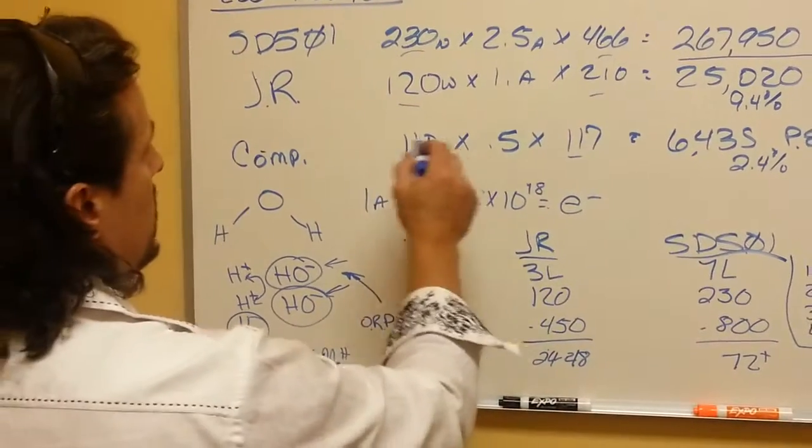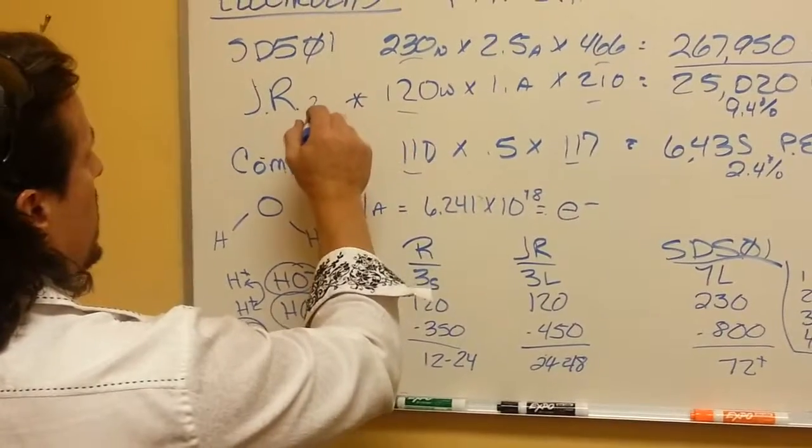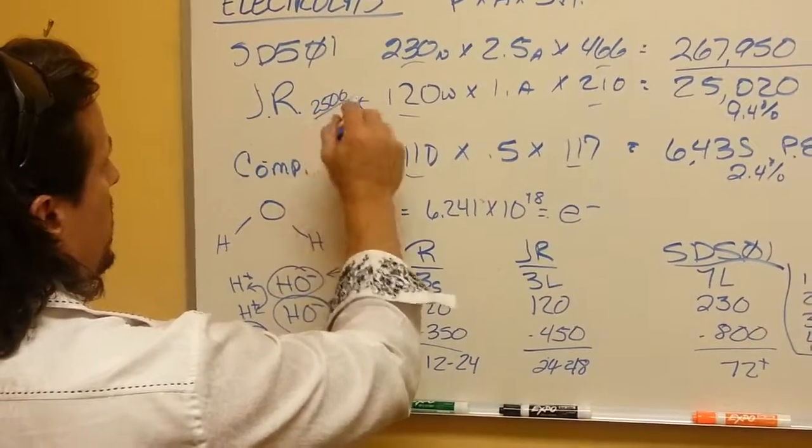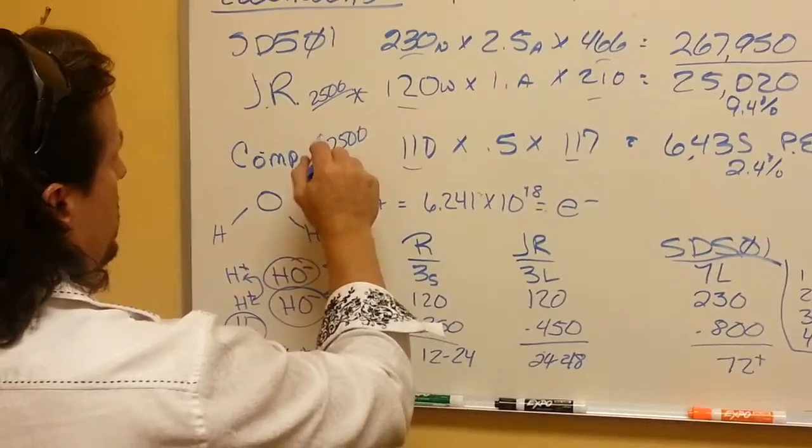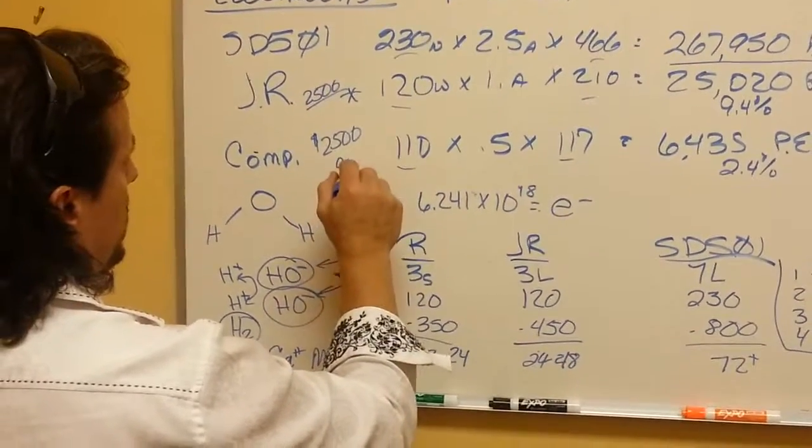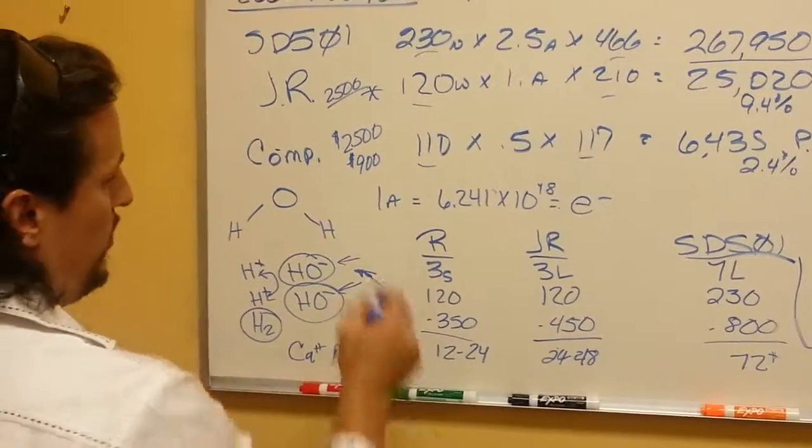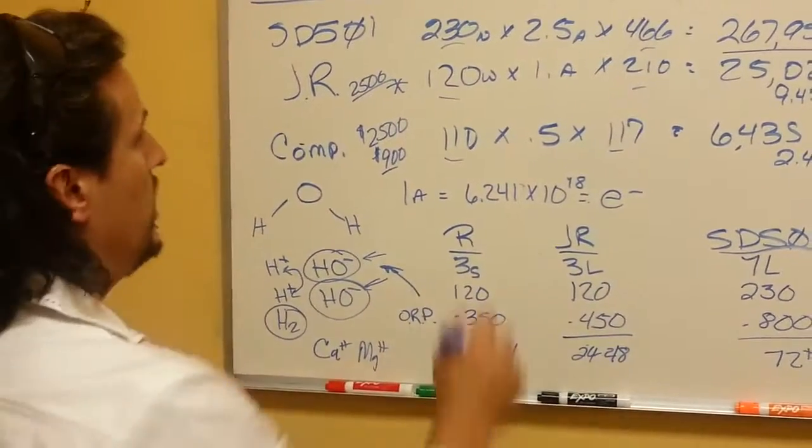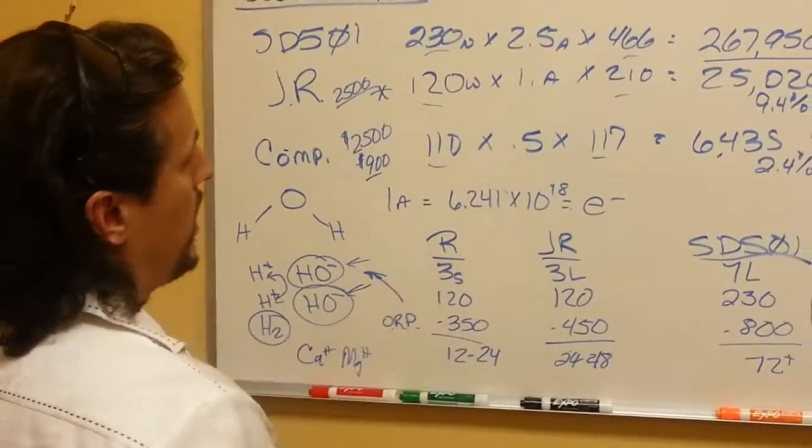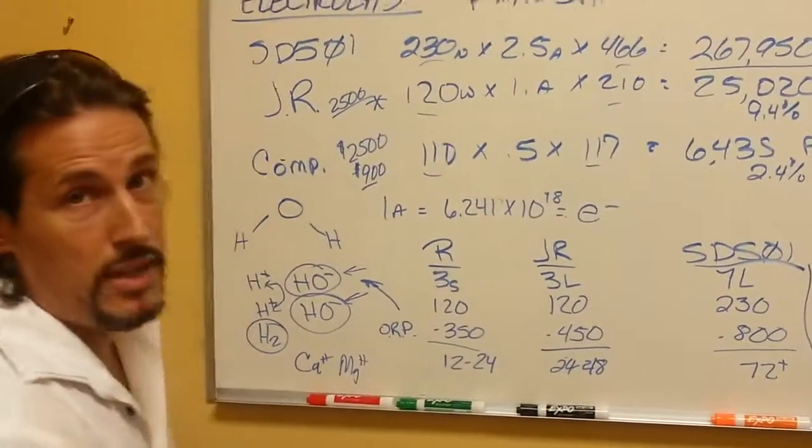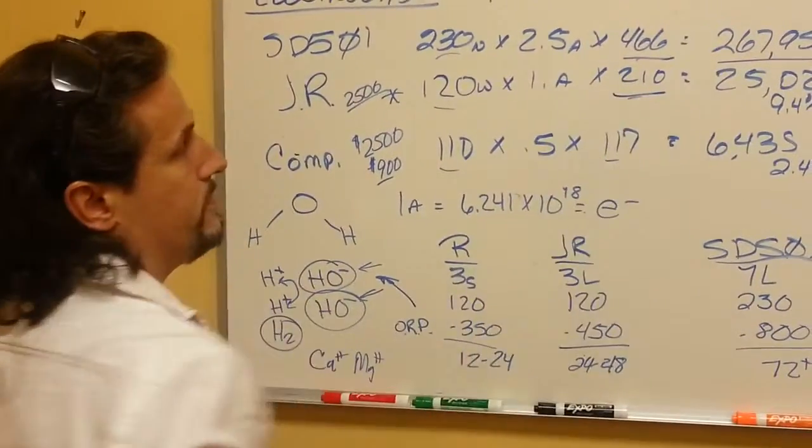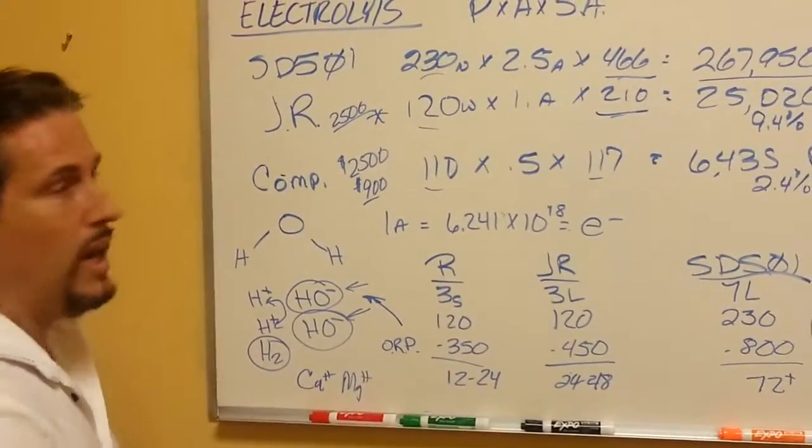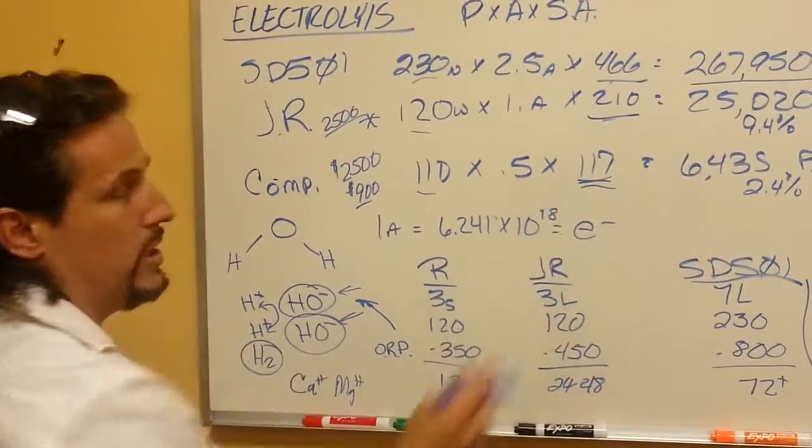But right here, you're looking at a machine that's about $2,500 compared to other machines that are about $2,500. If you look at the $900 machines, you get what you pay for. You're looking at low-grade titanium, low-grade platinum. These here use medical-grade titanium and medical-grade platinum in these plates. I don't know what kind of platinum or titanium you're getting in these.